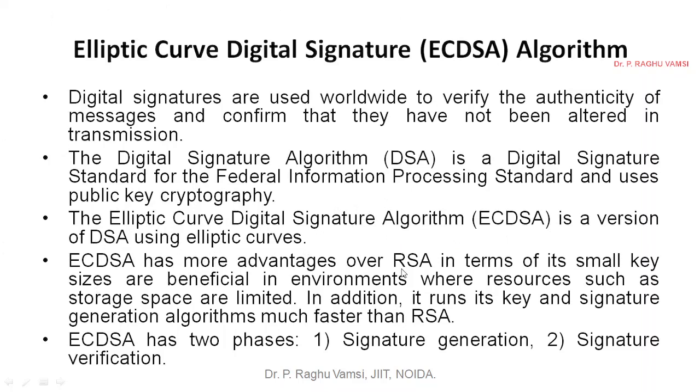ECDSA has more advantage over the RSA digital signature in terms of its small key size and it is beneficial because it can be computed on small devices that operate on battery. It's beneficial in environments where resources such as storage space are limited. In addition it runs its key and signature generation algorithms much faster than RSA. ECDSA is far better than RSA digital signature.